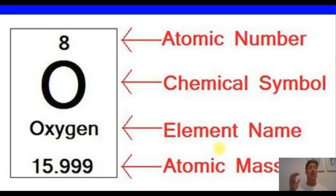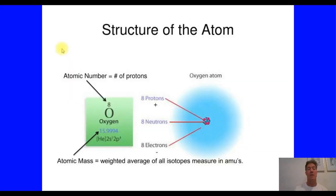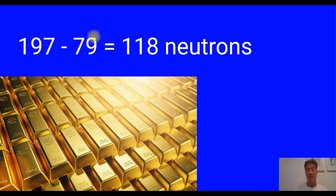Now we can decode all the parts of a periodic table entry. Here's the chemical symbol, the element's name — oxygen — its atomic number, and its atomic mass. From this we can conclude: if the total of the protons and the neutrons equals 16, there must be 8 neutrons in addition to the 8 protons. Let's look at gold: gold has an atomic mass of 197 and atomic number 79, which is the number of protons. So if we take 197 minus 79, we get 118 neutrons.